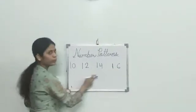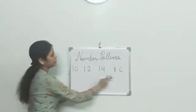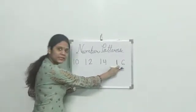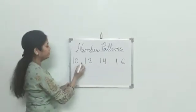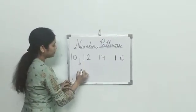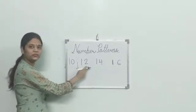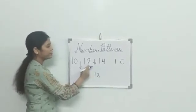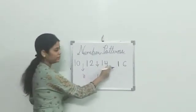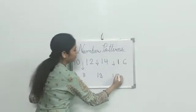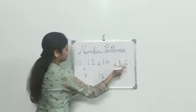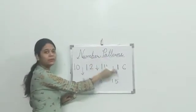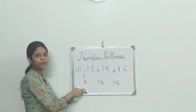We will take one more example. Check carefully: numbers 10, 12, 14 and 16. Here, number 11 is missing between 10 and 12. Number 13 is missing between 12 and 14. And number 15 is missing between 14 and 16. Again, it is following the number pattern — the same sequence of numbers.